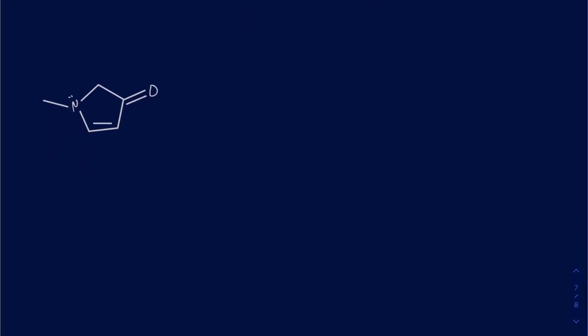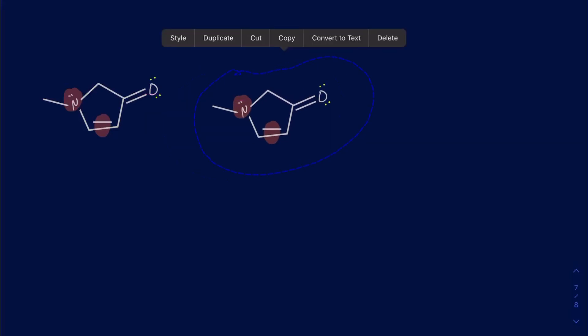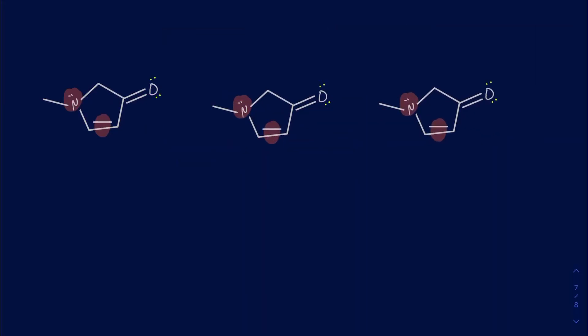For this next one, it's probably a good idea if you pause and try this on your own. We have a lone pair on the nitrogen, and this lone pair and the double bond are allylic with respect to one another. I'll copy this structure down so I don't have to draw it multiple times. I can have the lone pair moving in to create a double bond between the nitrogen and the carbon, and in doing so the pi bond is going to break, creating an electron pair onto the next carbon.